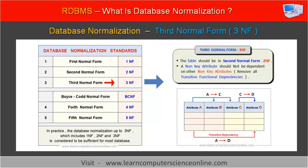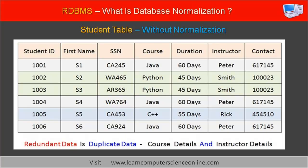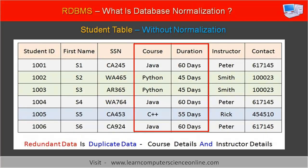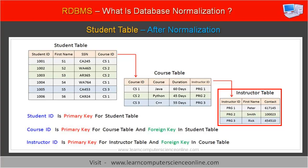Let us now understand the database normalization rules by applying these rules to the previous example of the student table. In order to normalize this single large table, we need to first create a separate table for each database entity. So let us split the single large table into three separate tables. We now have three separate tables: the first is the student table, the second is the course table, and the third is the instructor table.